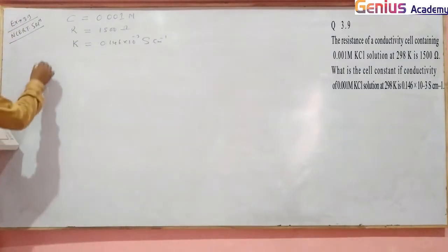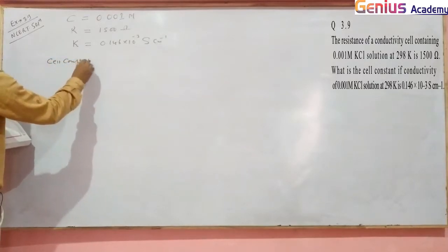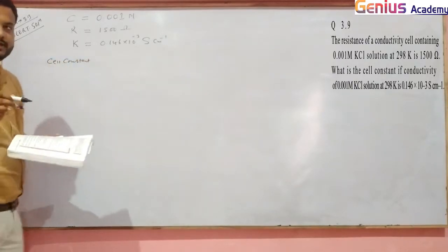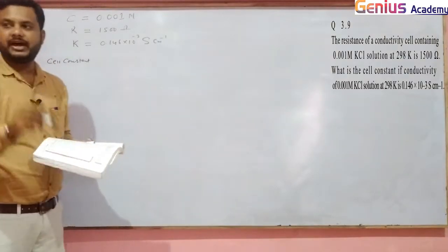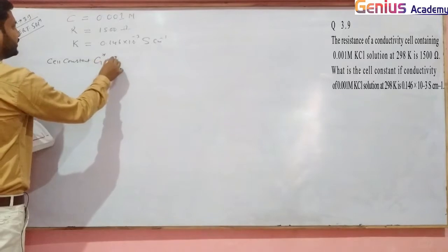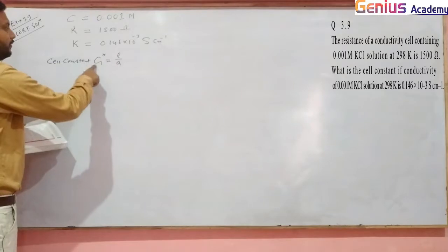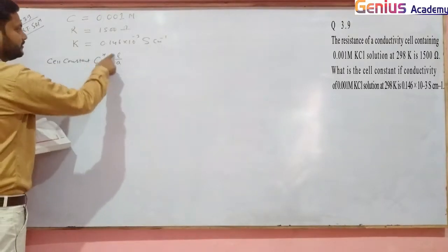The cell constant is represented by G*, which is L/A - length divided by area. This is the cell constant, G* equals L upon A.